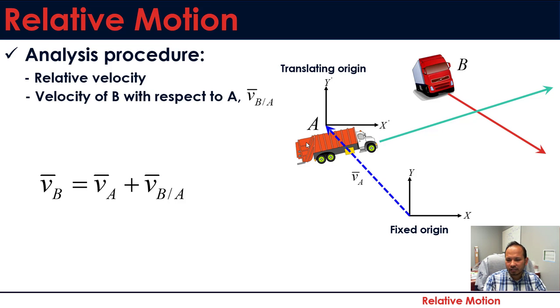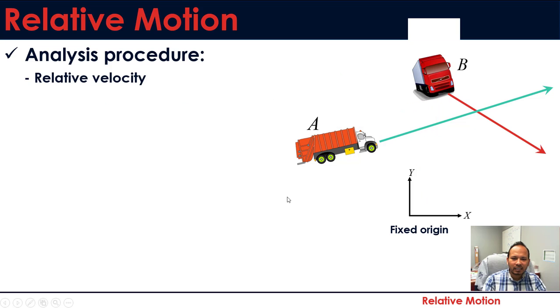Once you have figured that out, then the vector addition is simple. You have to find the vector of each of the trucks from the fixed origin, so it's vA vector and vB vector, and then you have to do the vector addition. That will give you the relative velocity of B with respect to A.